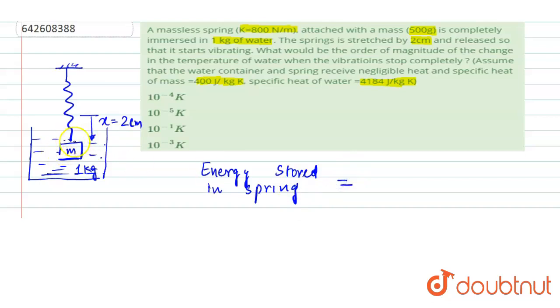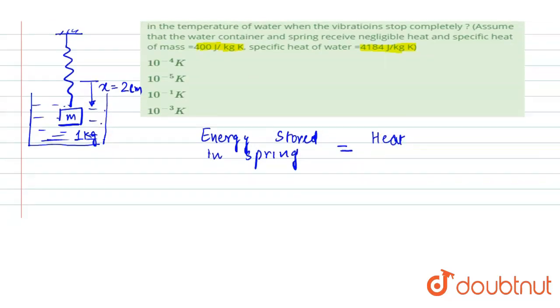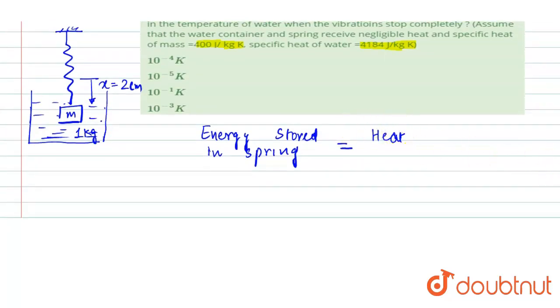Once the spring gets detached from the block, whatever energy is stored in the spring will be used for heating up the block and the water. That would be converted into heat.